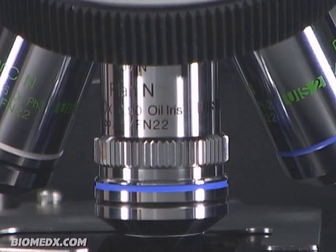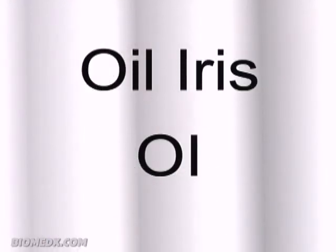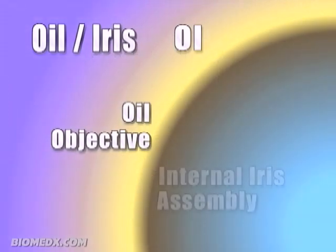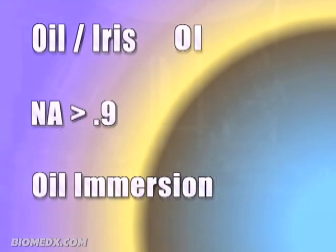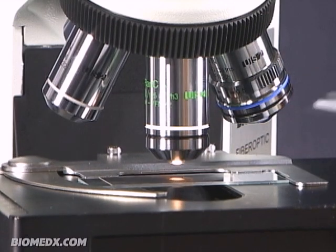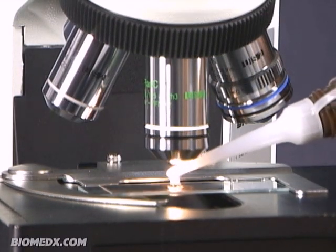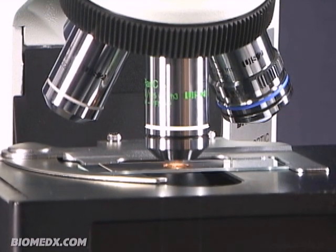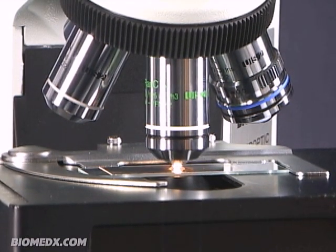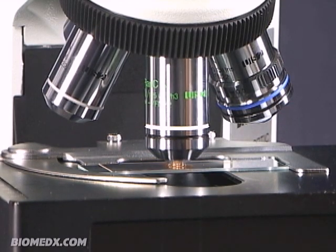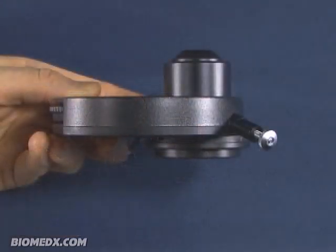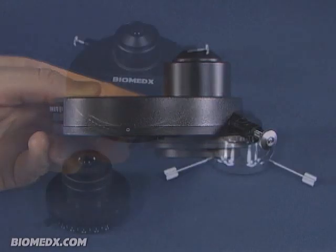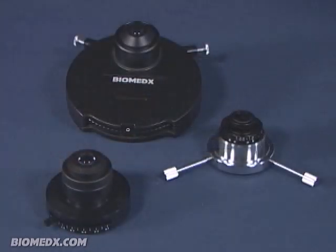Something else you might see written on an objective are the words 'oil' and 'iris', or it may be an abbreviation of OI. This would mean it is an oil objective with an iris assembly inside. Generally, any time you have an objective with a numerical aperture above 0.9, it would be an oil immersion objective. This means the objective is immersed in a special type of optical oil, and the oil actually becomes an integral part of being able to capture a higher resolution image. The lens of the objective is designed to be used with the oil. The same can be said for a condenser — these also have numerical aperture designations, and condensers can be oiled and must be oiled in many cases when going for higher power and higher resolution images.